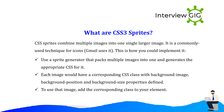What are CSS3 sprites? CSS sprites combine multiple images into one single larger image. It is a commonly used technique for icons — Gmail uses it. To implement it: use a sprite generator that packs multiple images into one and generates the appropriate CSS. Each image has a corresponding CSS class with background-image, background-position, and background-size properties defined. To use that image, add the corresponding class to your element.